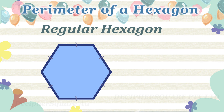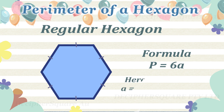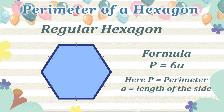The formula for the perimeter of a regular hexagon is p equals six multiplied by a, where p is the perimeter and a is the length of each side.